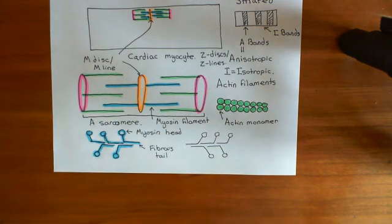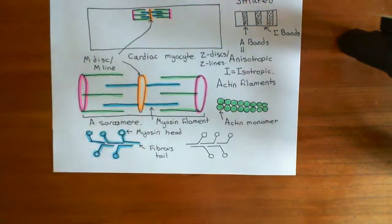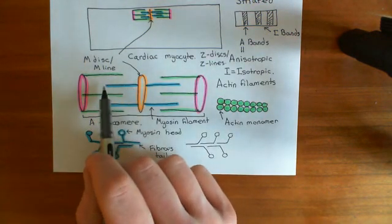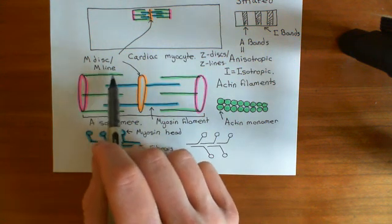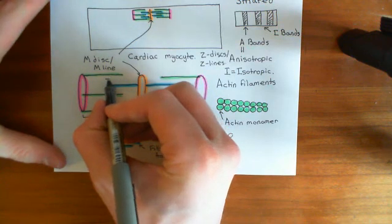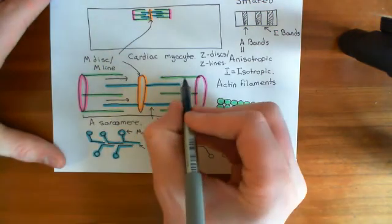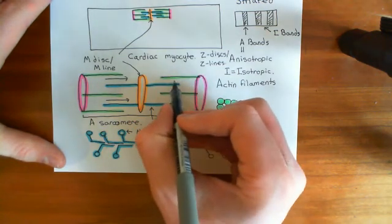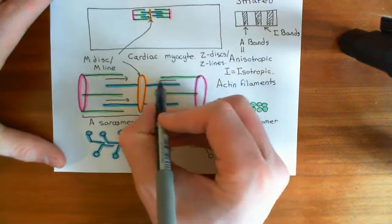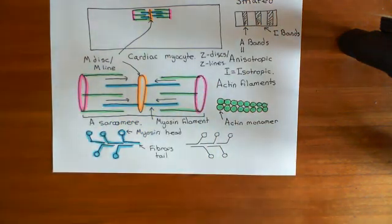The sarcomere is capable of contracting. When calcium rises and stimulates the sarcomere, the myosin filaments start interacting with the actin filaments, pulling them towards the M disc. On each side, the myosin filaments pull the actin filaments and thus draw the Z discs towards the M disc. Overall, the two Z discs are brought closer together — and that's how the sarcomere contracts. We'll continue this discussion in the next video.